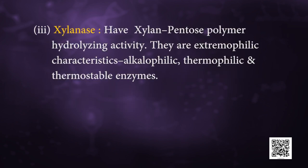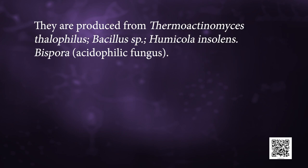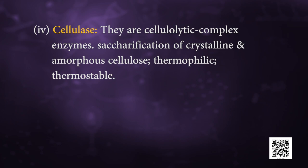Next enzyme is xylanase. They have xylan pentose polymer hydrolyzing activity. They are extremophilic with characteristics of being alcoholophilic, thermophilic and thermostable. They are produced from Thermoactinomyces thallophilus, Bacillus species, Humicola insolens, and Bispora acidophilic fungus. They are used in pentose production, bioconversion of hemicellulose for fuel and chemicals, fruit juice clarification, improving rumen digestion, paper industry, and selective removal of xylans from pulp and brewing industry.